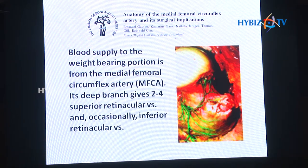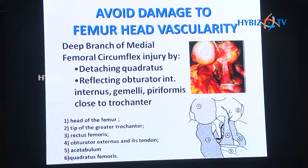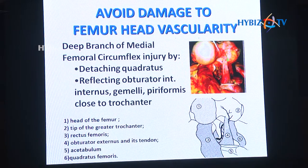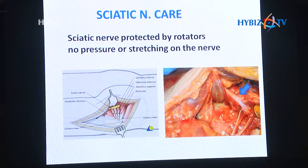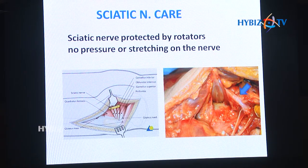These blood supply vessels are very important — if you cut them, there are chances the femoral head will go into avascular necrosis. The deep branches of the medial femoral circumflex artery are injured when you detach the quadratus or reflect the obturator internus from piriformis close to the trochanter, because this vessel goes just below the trochanter. You must then identify the sciatic nerve, which is protected by the rotators — there should be no pressure or stretching on the nerve.